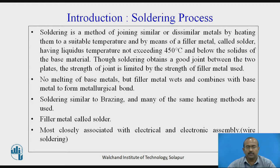Let us see the introduction of soldering process. Soldering is a method of joining similar or dissimilar metals by heating them to a suitable temperature by means of a filler metal called solder, having a liquidus temperature not exceeding 450 degrees Celsius and below the solidus of the base metal. Through soldering, a good joint is obtained between two plates. The strength of the joint is limited by the strength of the filler metal used. No melting of base metal occurs, but the filler metal wets and combines with the base metal to form a metallurgical bond. Soldering is similar to brazing and many of the same heating methods are used. The filler metal called solder is most commonly associated with electrical and electronic assembly, that is, wire soldering.